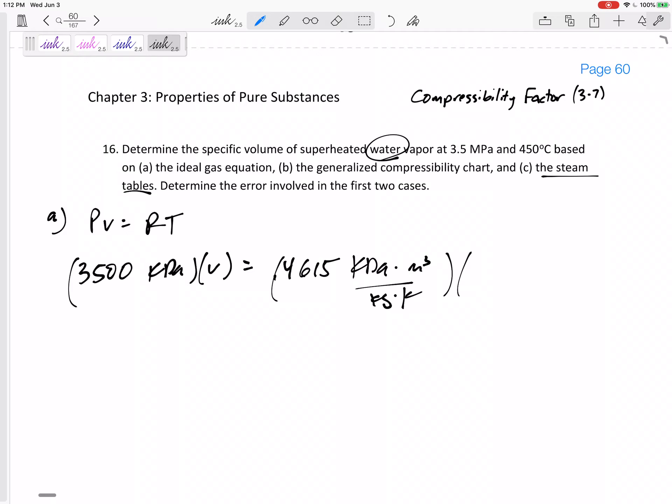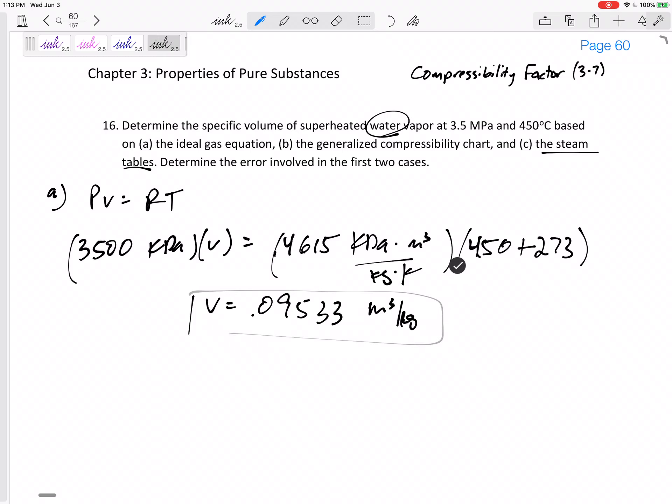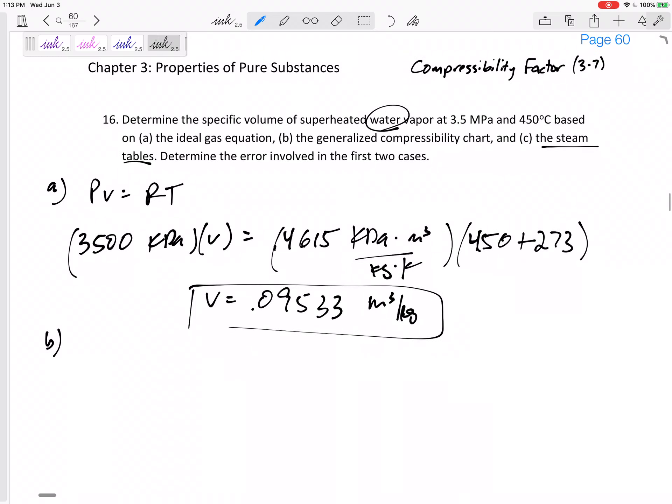And the temperature, can't just plug in 450, 450 plus 273, right? 450 plus 273, 723. All right, and so I would get a specific volume 0.09533 meters cubed per kilogram. So that is part A. We'll find the error a little bit later on.